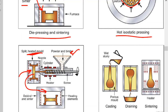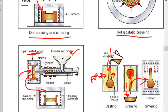In slip casting, powder is mixed with a liquid — preferably water — and poured into a porous mold. The metal particles stay inside while the water escapes through the porous mold and is drained outside. What remains is a shaped material powder, which is then heated in a furnace — sintering — to get the required shape.